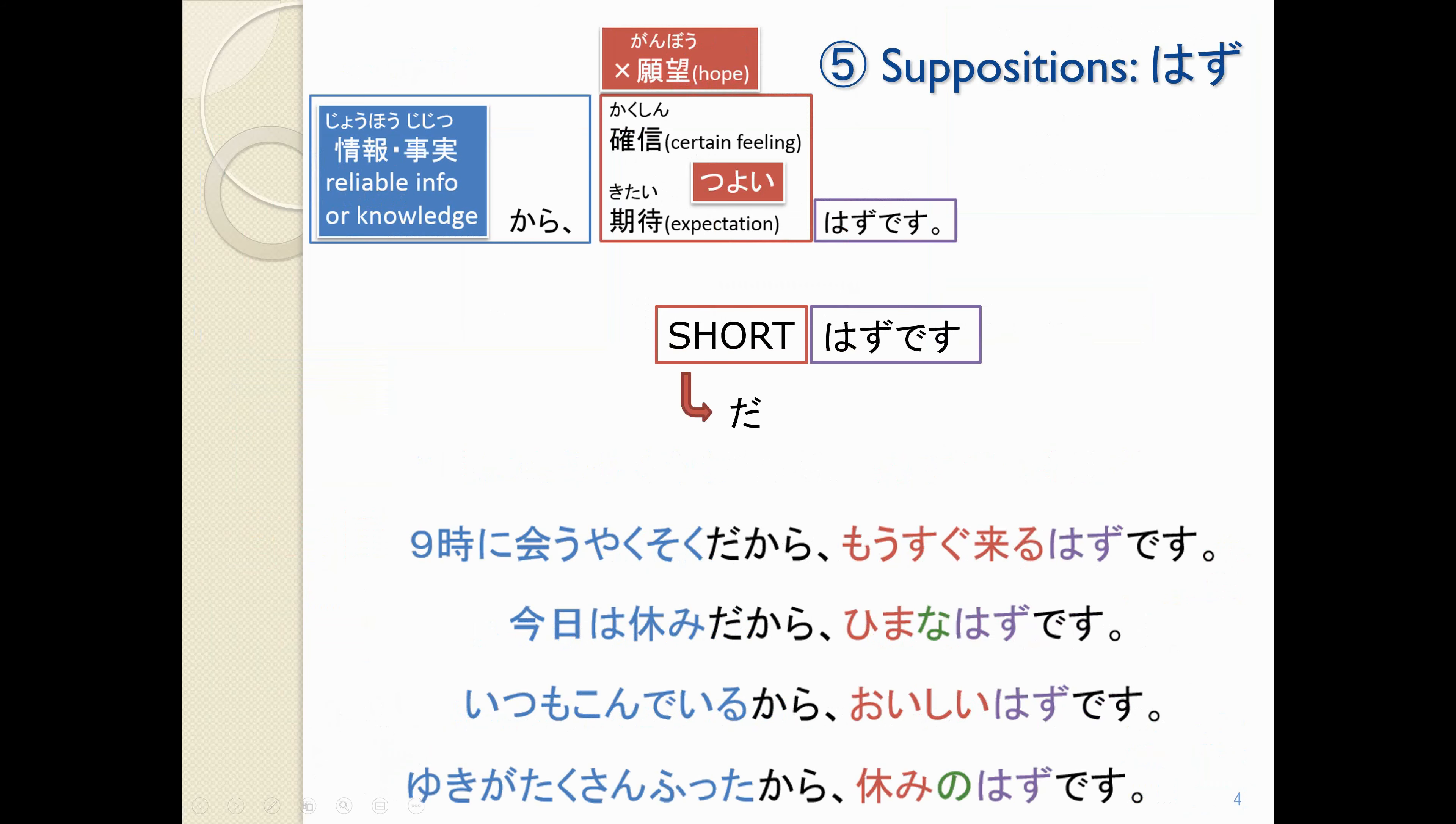So, we use this with the short form, plus はずです. So, for verbs, that means the dictionary form, the ない form, た form, なかった form. For nouns and な adjectives, instead of だ, for a noun, we're gonna put の, and for a な adjective, we're gonna put な. So, ひまなはずです。